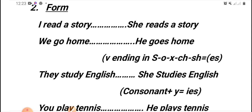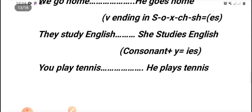For example, they study English. She studies English. When the verb ends with y and preceded with a consonant letter, I omit y and put i, e, s, like study. It becomes studies. You play tennis. He plays tennis. Play ends with y but preceded with a vowel letter. I put y and put in the end of the verb s.